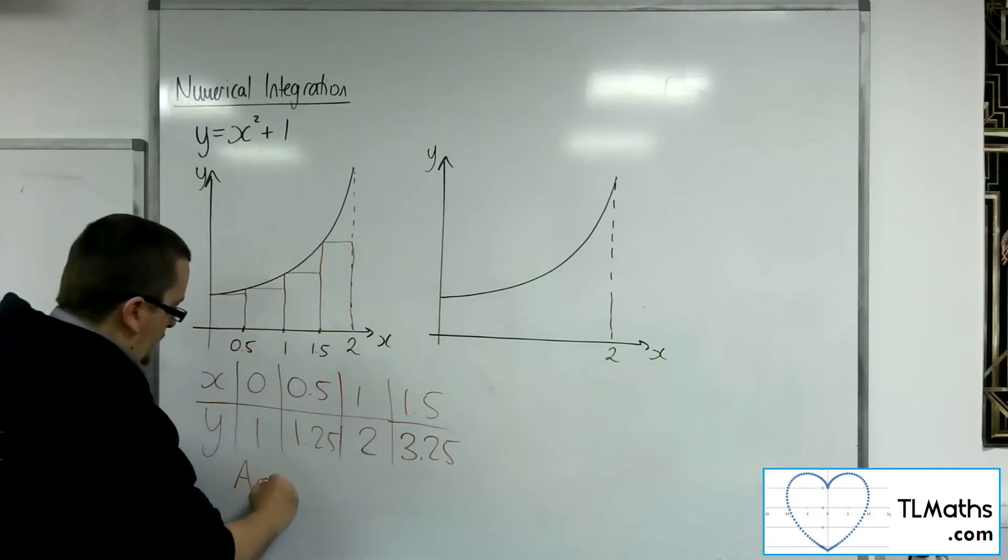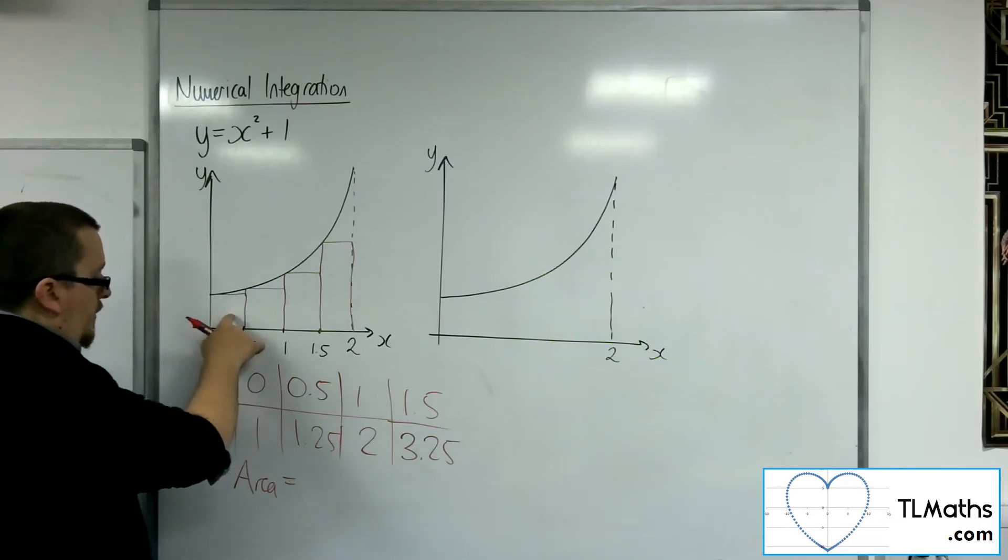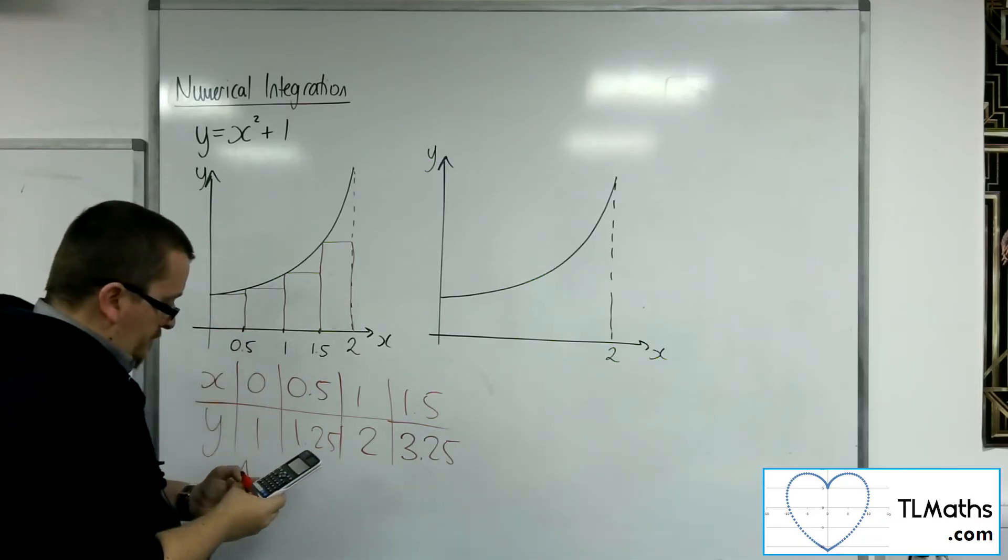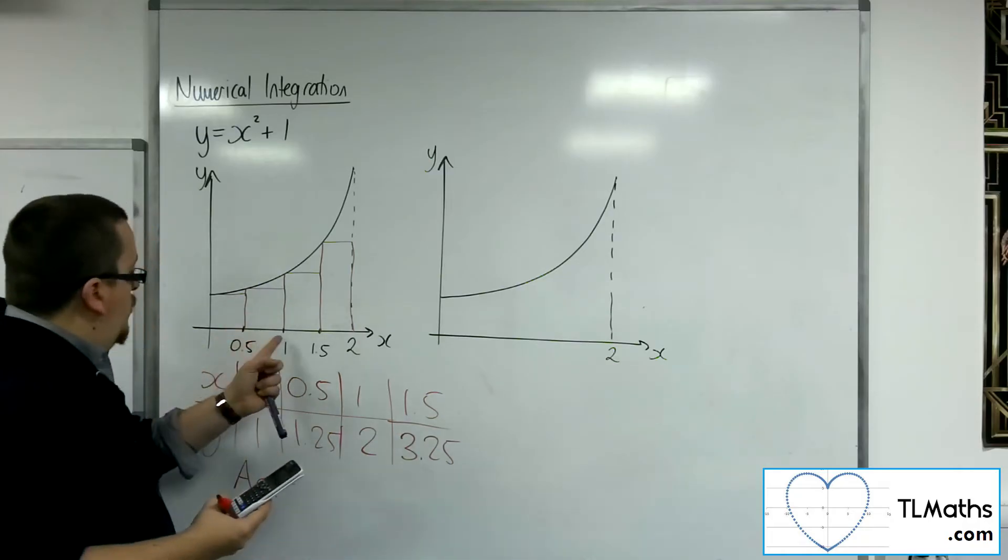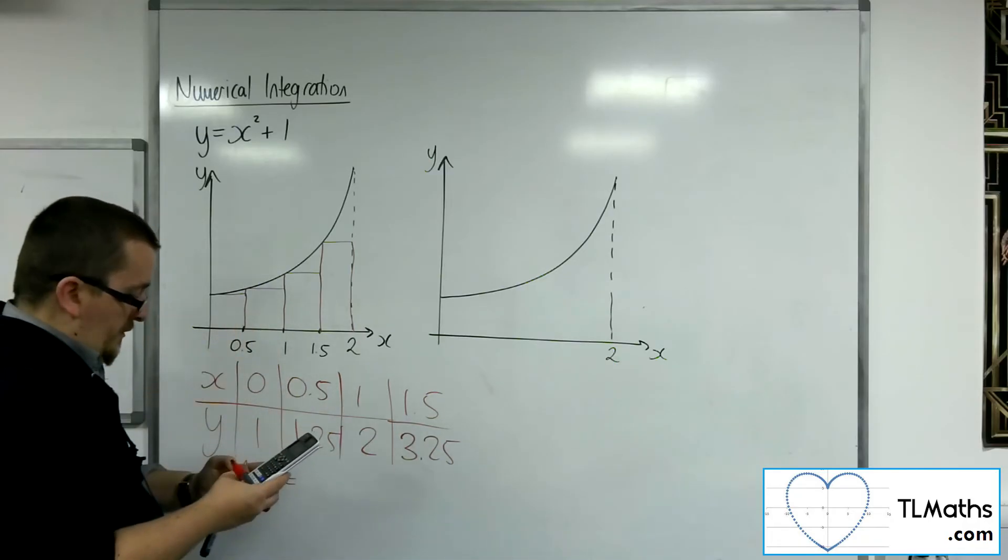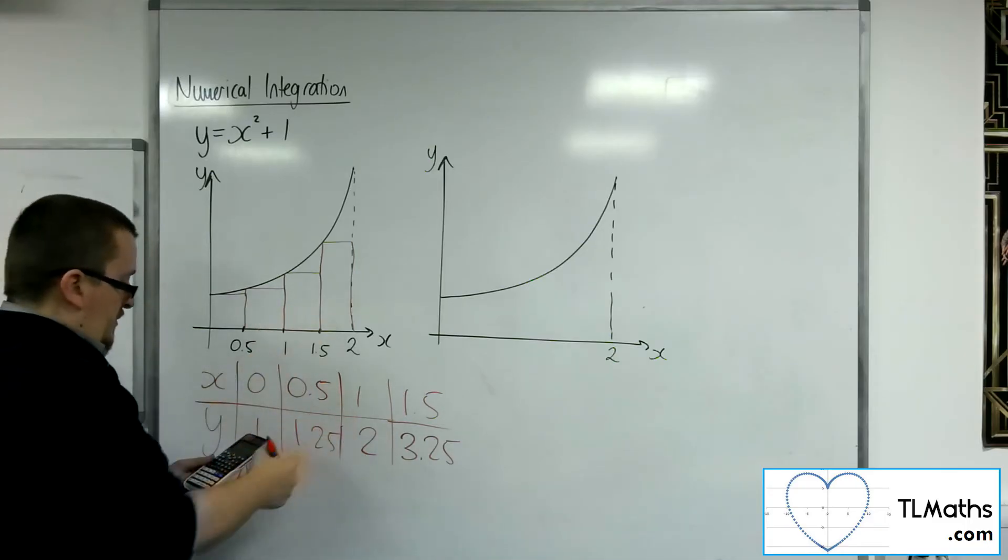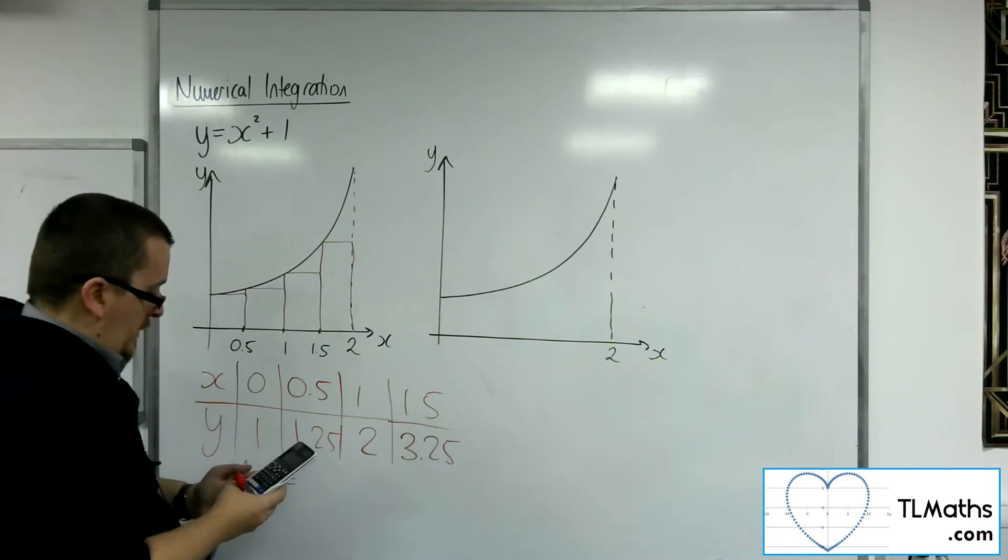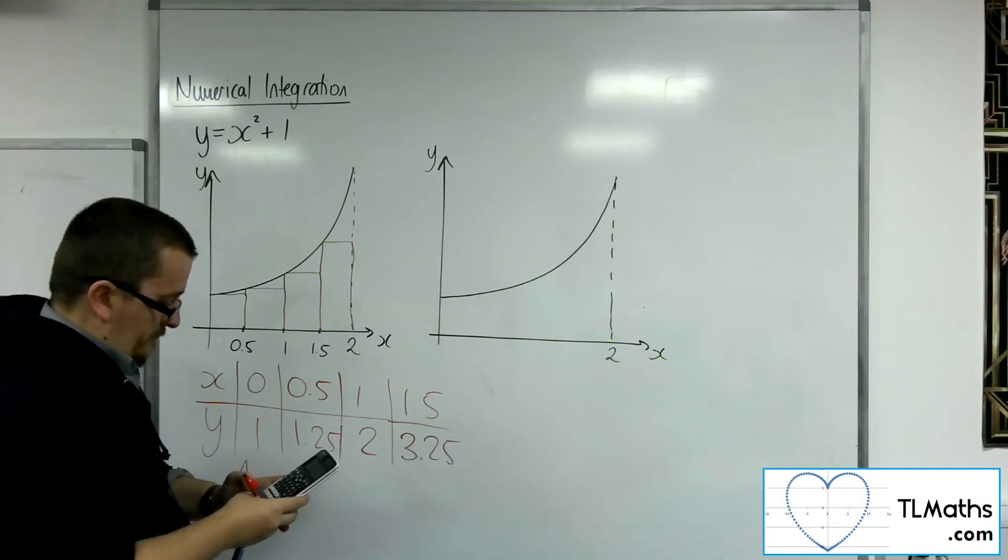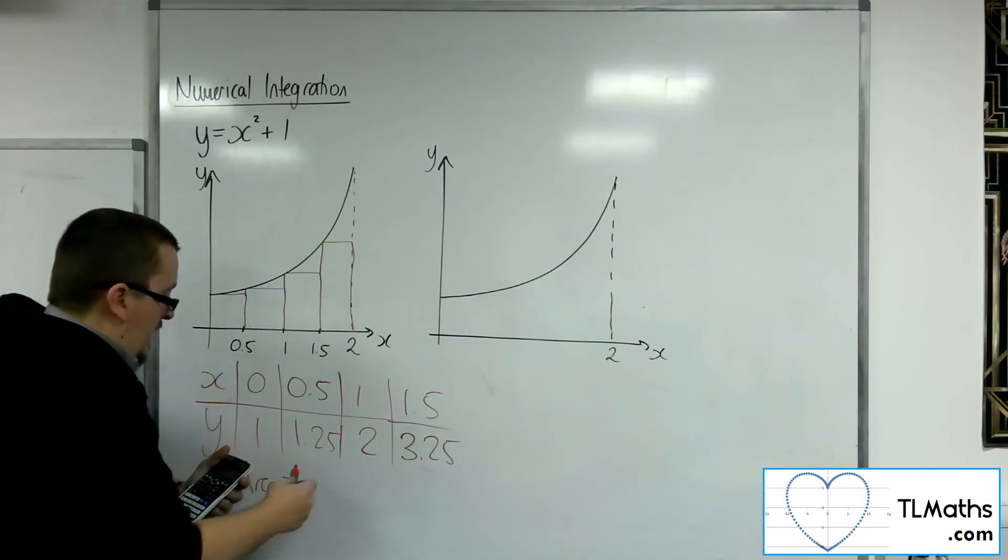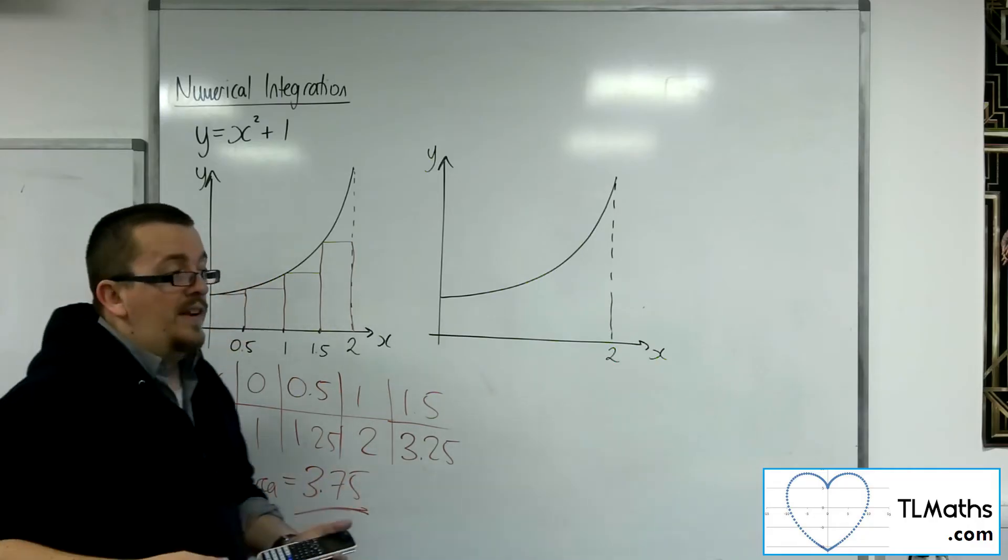So the total area is going to be 0.5 times 1, so 0.5, plus 0.5 times 1.25, plus 0.5 times 2, plus 0.5 times 3.25. And that gets me 3.75. And that is an estimate to that area.